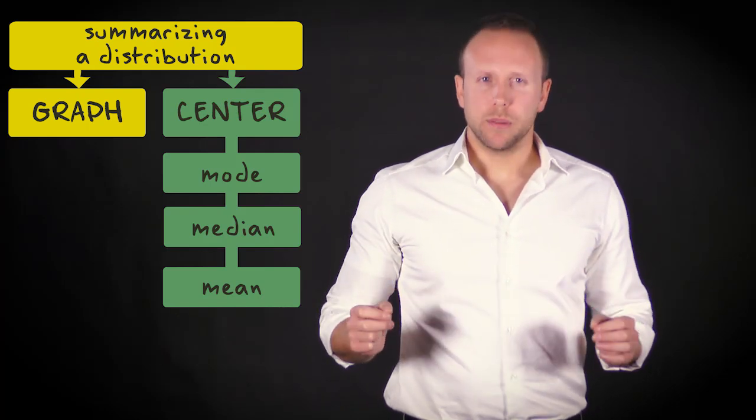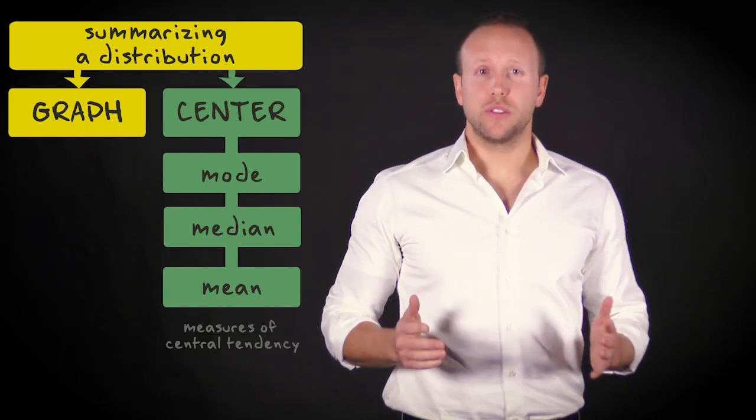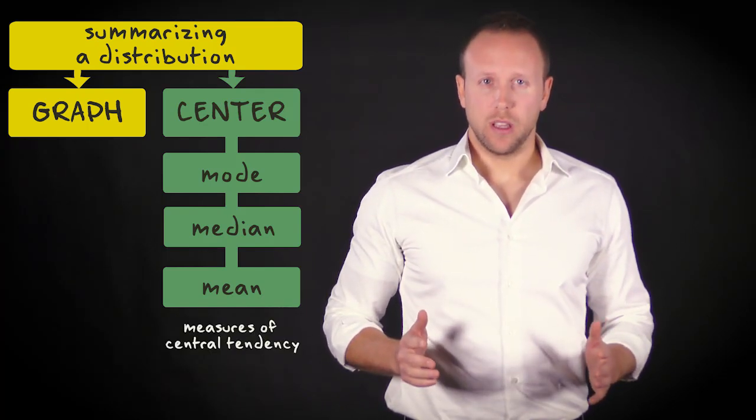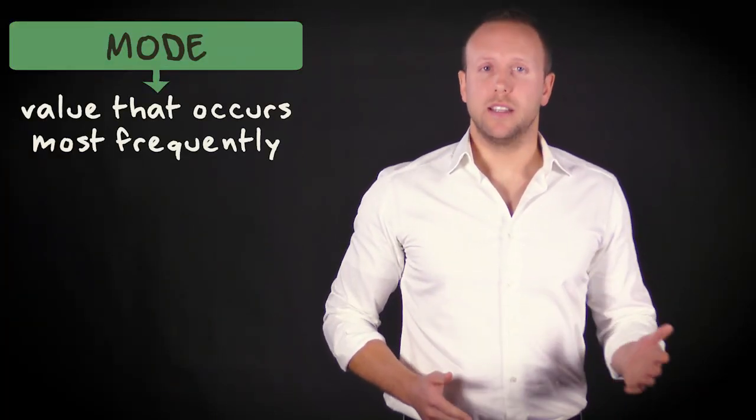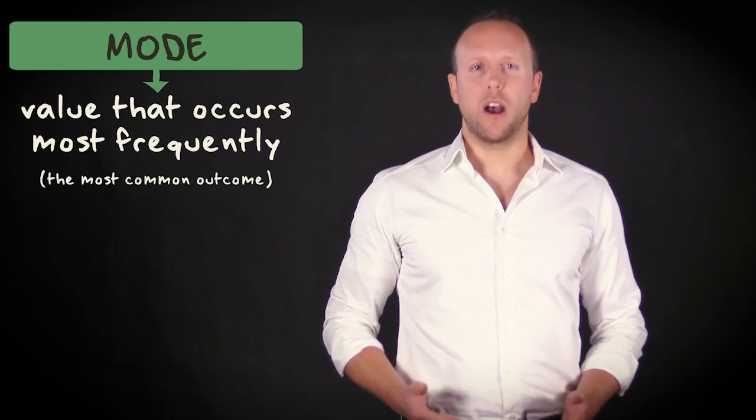These three M's are often referred to as measures of central tendency. Finding the mode is easy. It is the value that occurs most frequently. It is, in other words, the most common outcome.